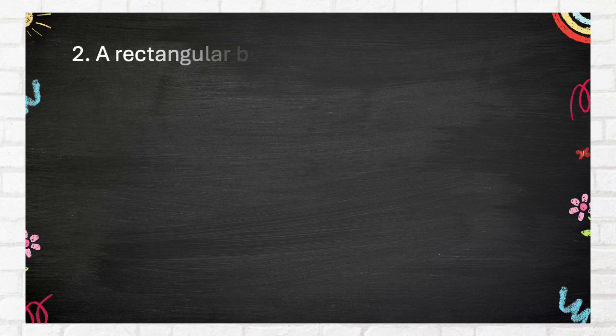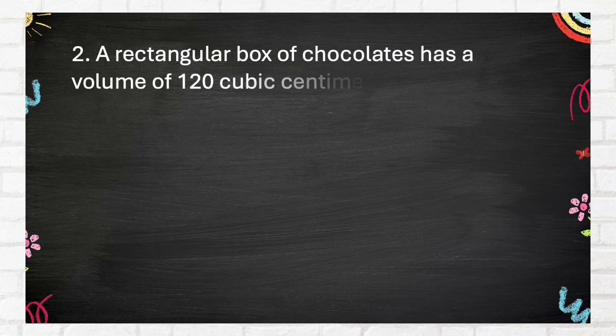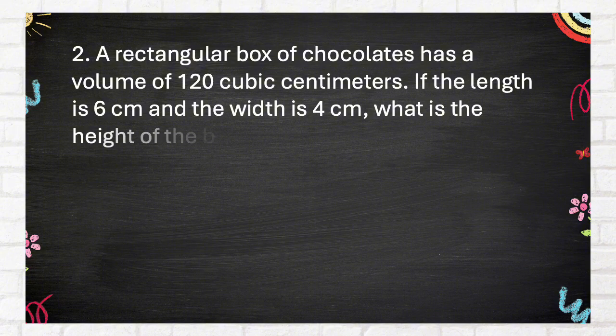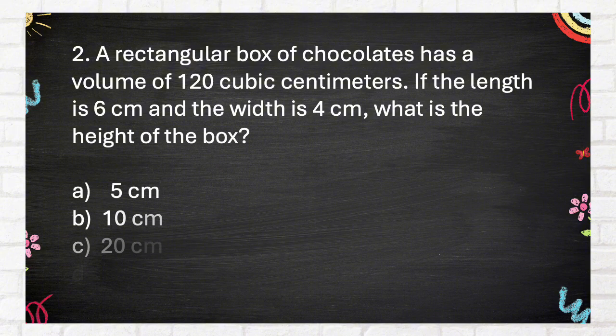Number 2. A rectangular box of chocolates has a volume of 120 cubic centimeters. If the length is 6 centimeters and the width is 4 centimeters, what is the height of the box?